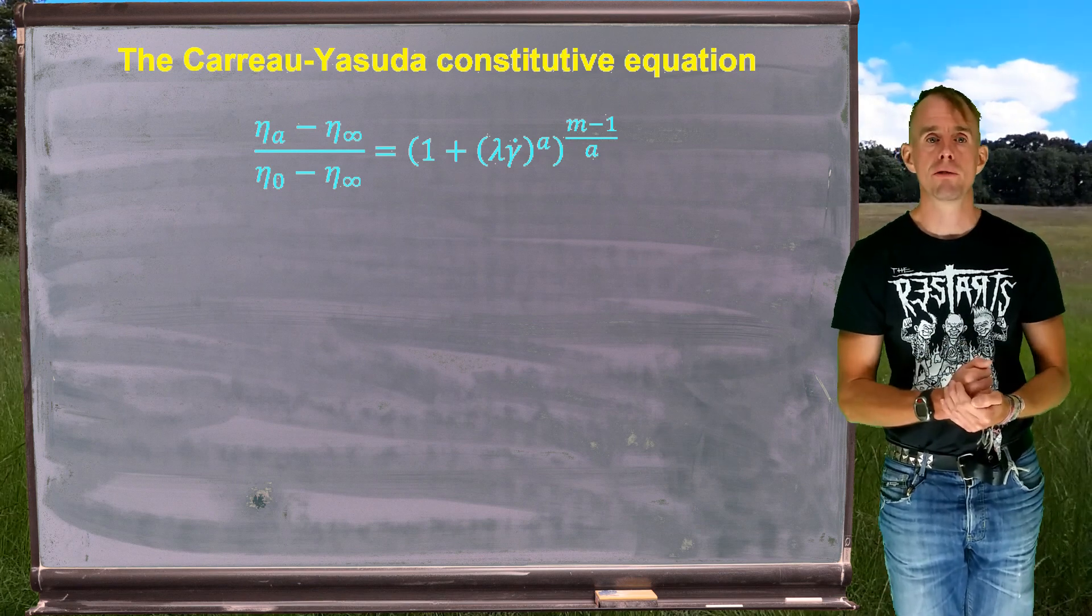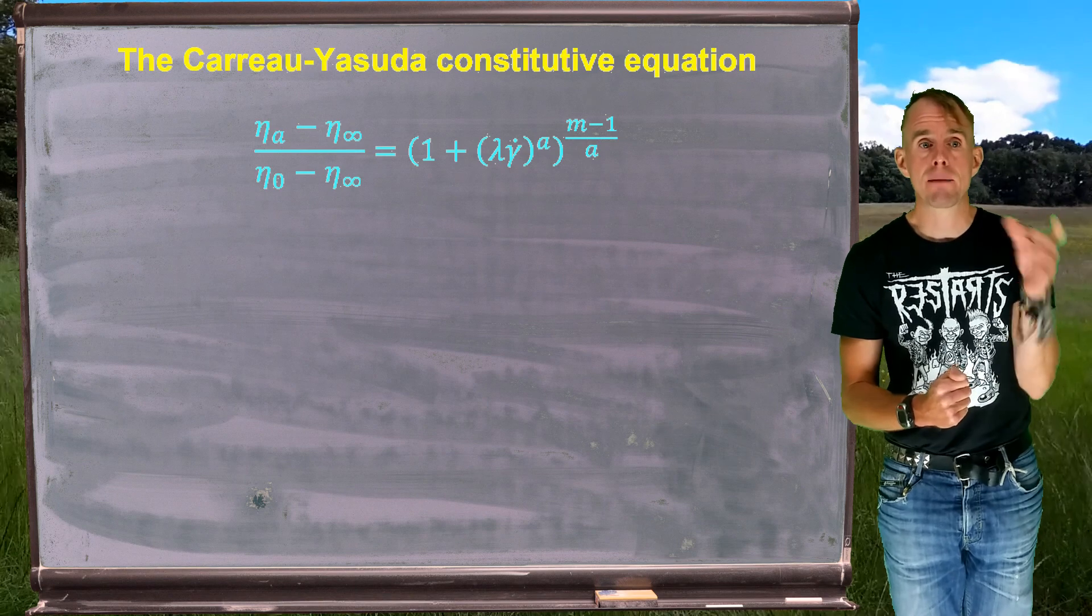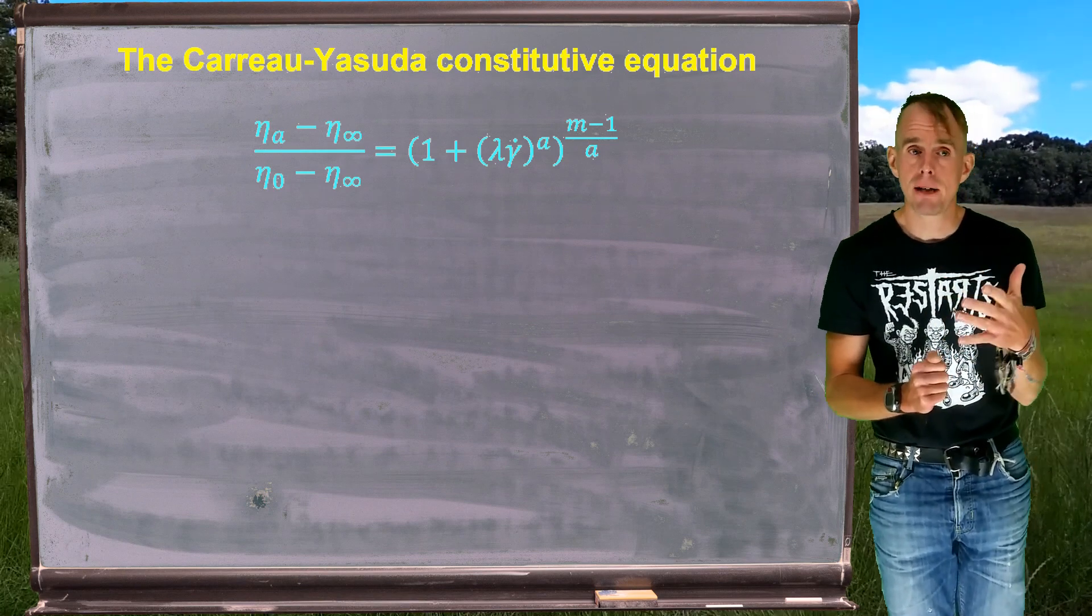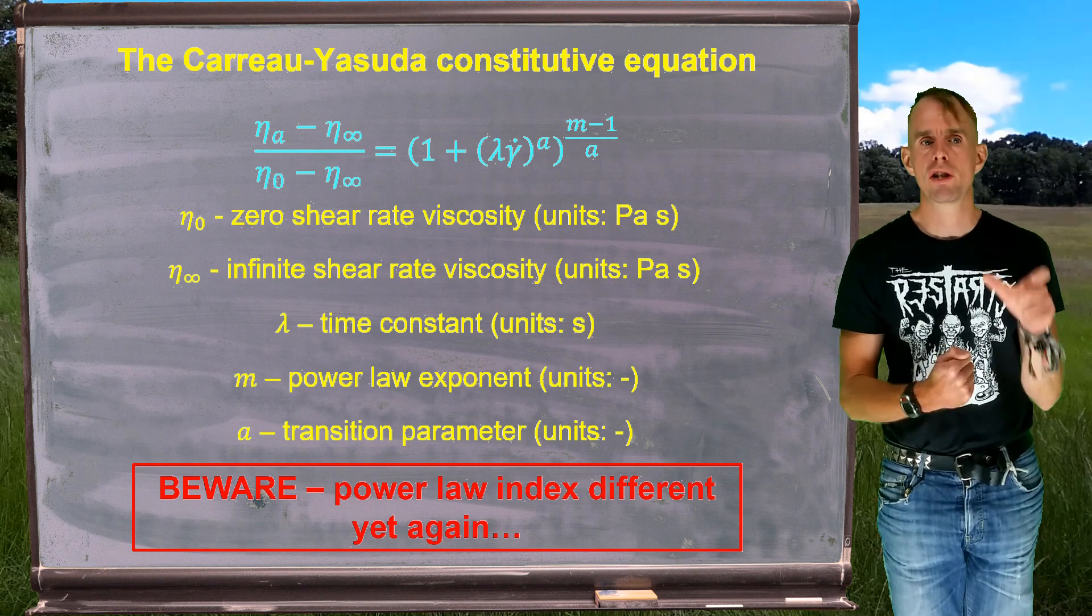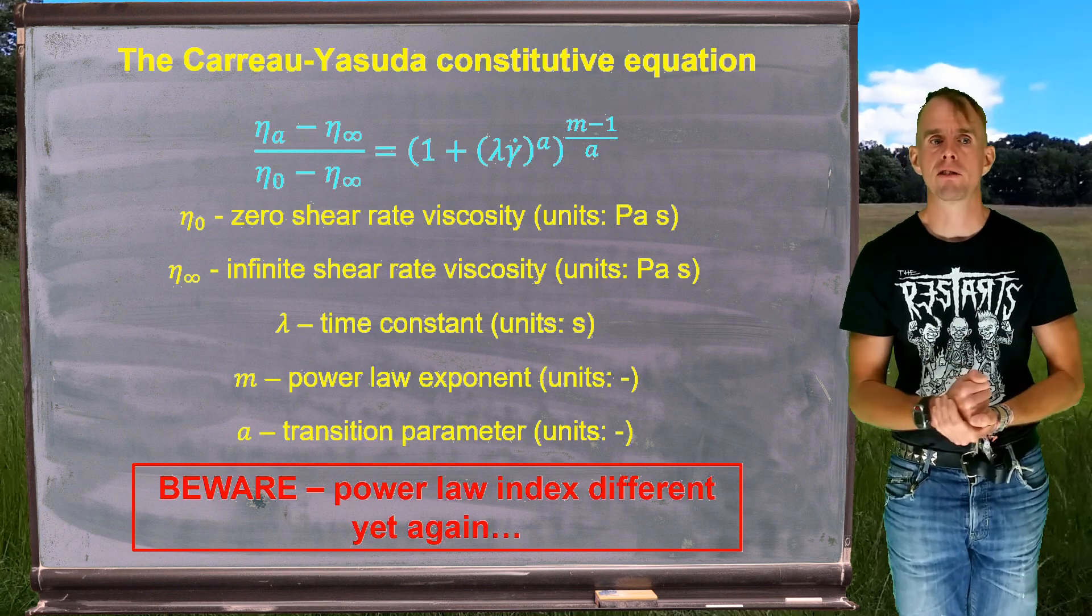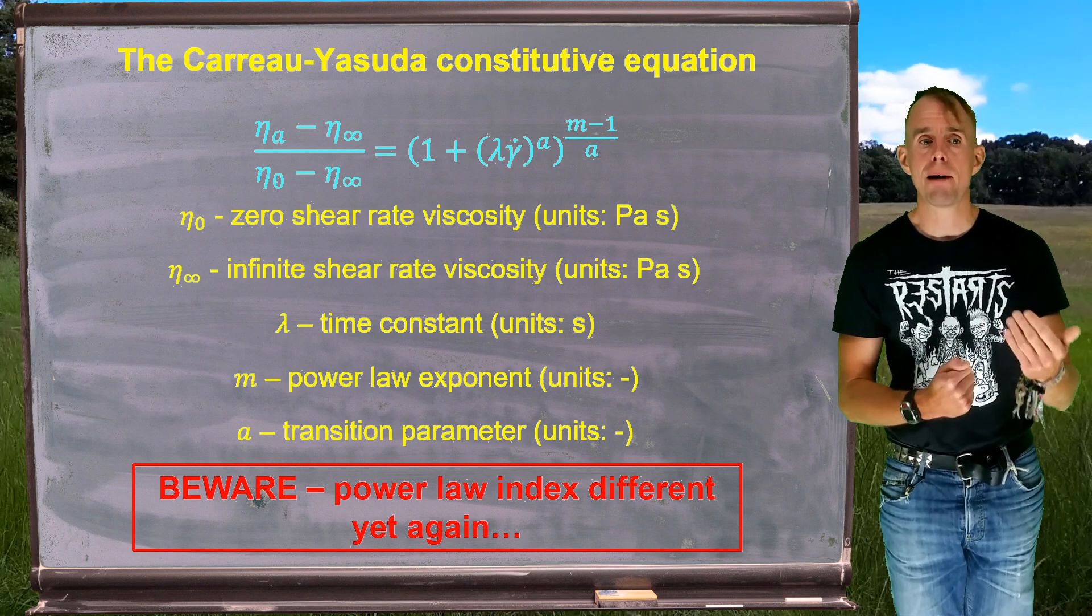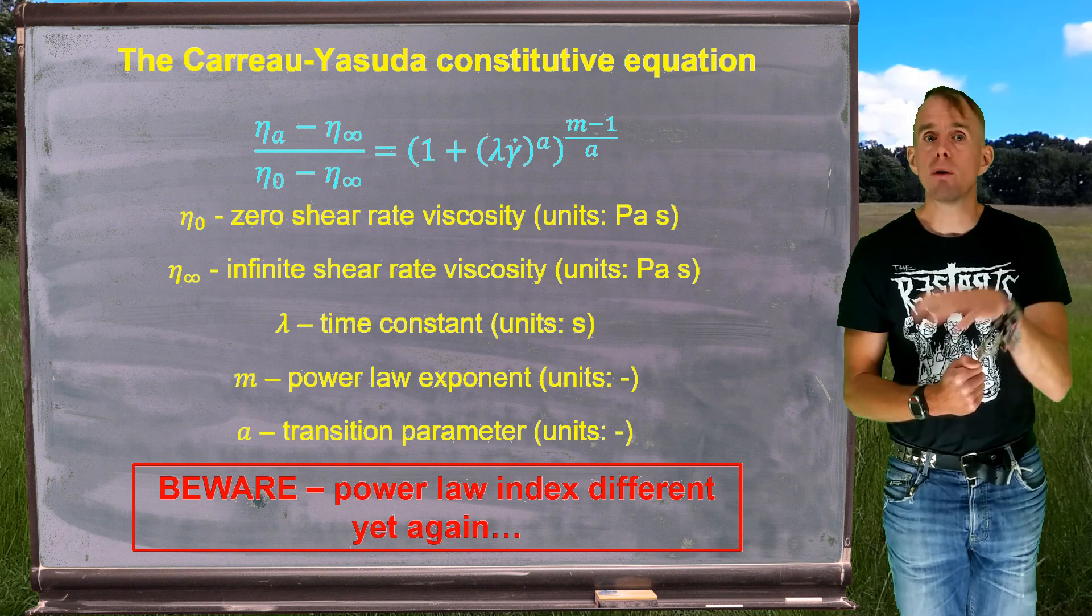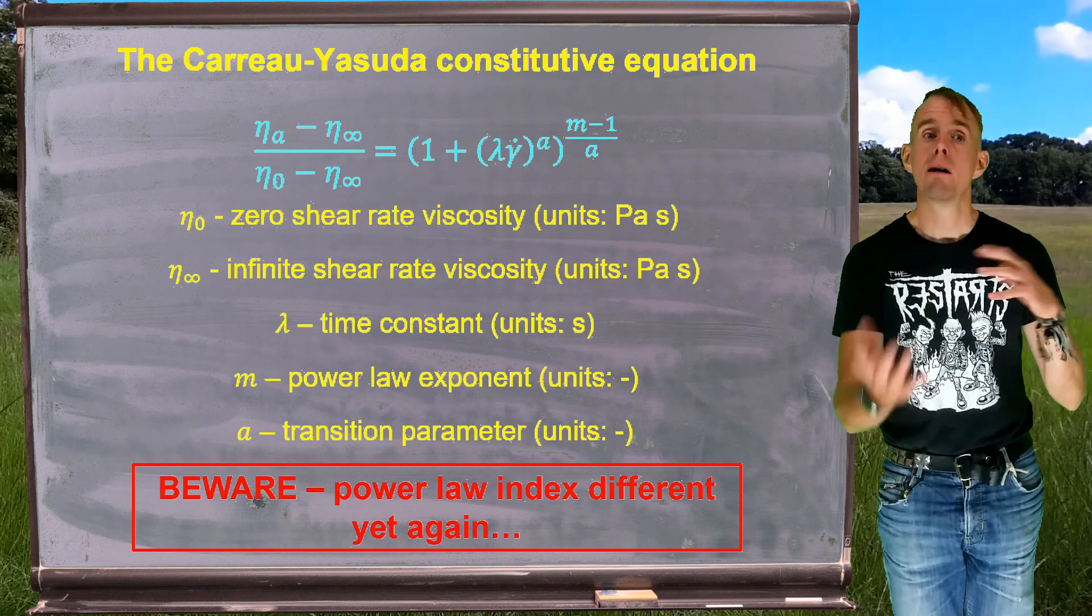So that quotient is equal to some terms on the right-hand side. And we can see the terms on the right-hand side actually look quite similar to the Carreau equation. We've got a 1 plus lambda gamma dot, now raised to the power a rather than 2, with the whole bracket raised to m minus 1 over a rather than p. So these terms, of course, have names. Eta zero is the same as the Carreau eta zero. It's a zero shear rate Newtonian plateau viscosity in Pascal seconds. Eta infinity, now, is our high shear rate Newtonian plateau viscosity, also of units Pascal second. We still retain lambda, our time constant, but we have two indices now. We have a power law exponent m and a transition parameter a. And again, be careful, the power law index here, or the power law exponent, is not the same as the one in the power law fluid. And again, we have to be very careful if we want to interchange numerical data between the two constitutive laws.